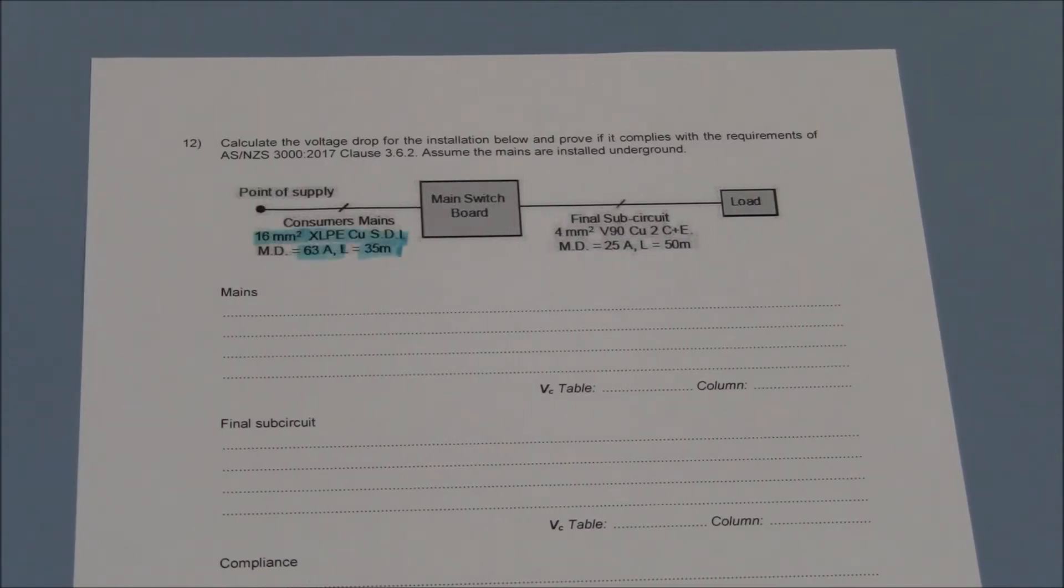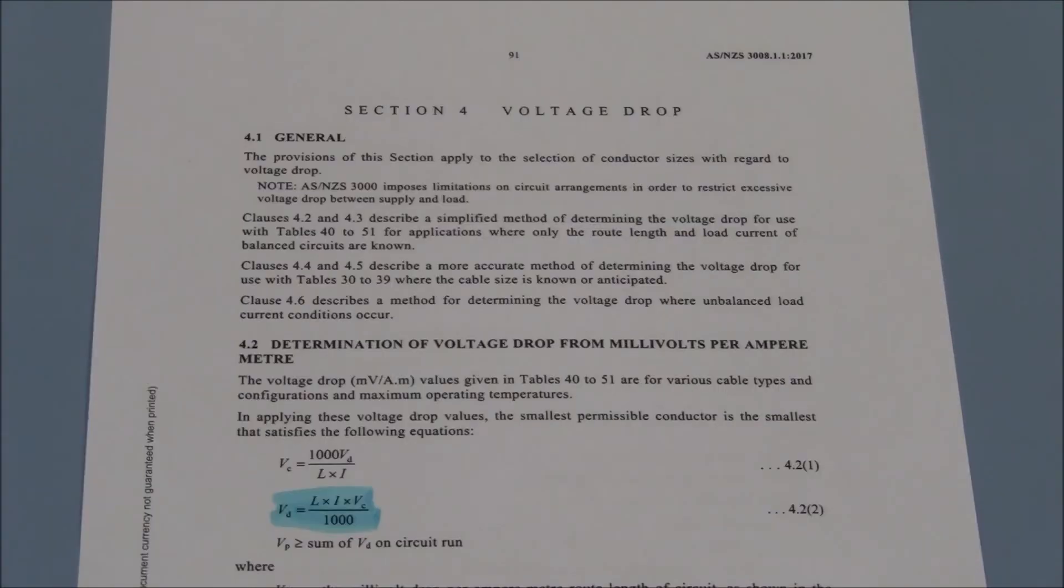The cable is a 16mm² SDI with copper conductors and XLPE or X90 insulation installed underground. The circuit is 35 metres long with a maximum demand of 63 amps. The voltage drop calculations are listed in section 4 of AS3008.